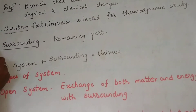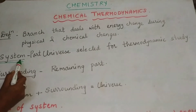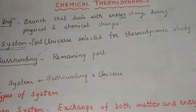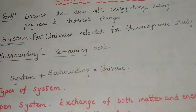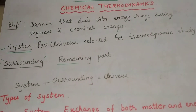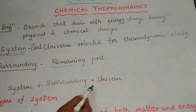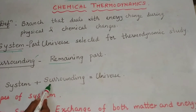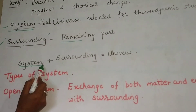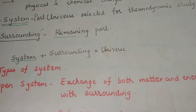Now what is surrounding? The system is the part where thermodynamic study is taking place. Surrounding, as the word itself indicates, is the remaining part of the universe except the system. When you combine the system with the surrounding, you get the universe.